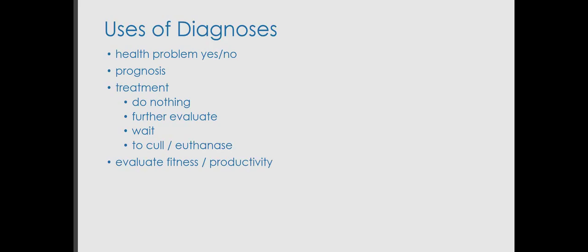If we are looking into diagnostic sensitivity and specificity, we do it because we realize that the diagnosis of a disease is one of the key decisions that a veterinarian has to make. These decisions can be about simple questions like whether an animal has a health problem or not, what the prognosis will be for an animal that has a particular disease, and whether we decide to treat or further evaluate, or whether we wait and see what to do.